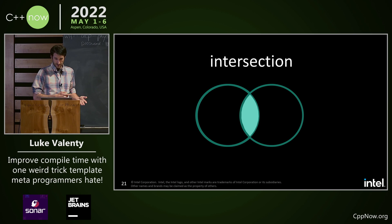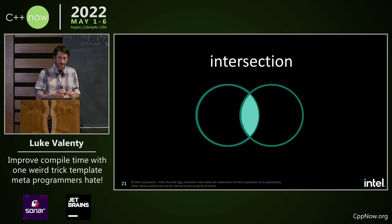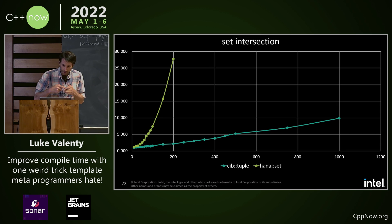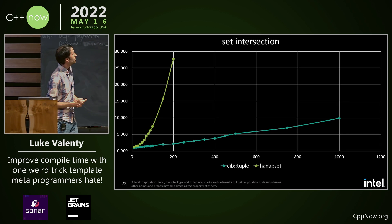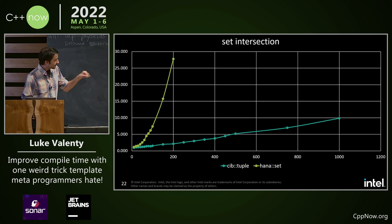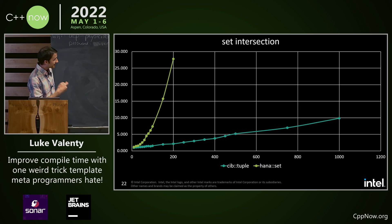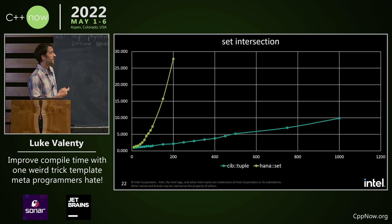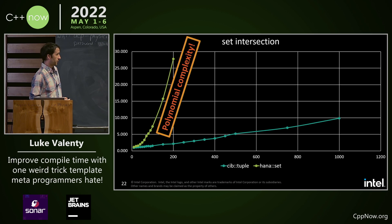Intersection: you have one set and another set, and you find all the elements that are in both of those. We have the same story here — the CIB tuple is basically linear while the HANA set looks polynomial.